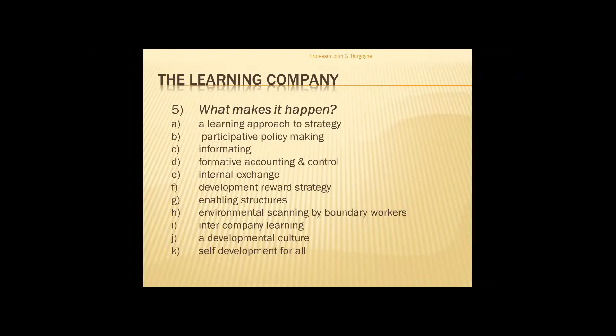Participative policy-making is the left-hand figure-eight in the eFlow model — the extent to which organisations don't just brief downwards but listen upwards, as in the Honda versus General Motors example. Informating is particularly relevant in the IT age: making the organisation at least internally transparent so people can consult with each other, dig into shared databases — with due regard to confidentiality — and generally speed up and democratise useful decision-making processes.